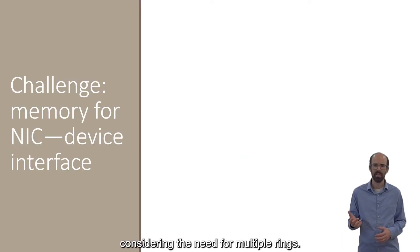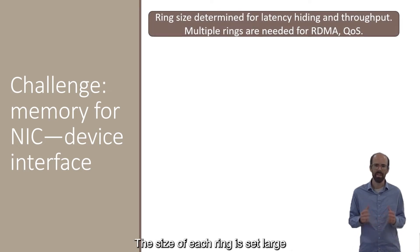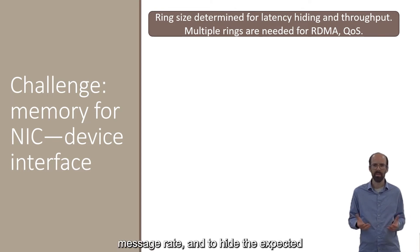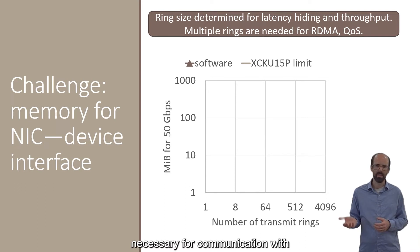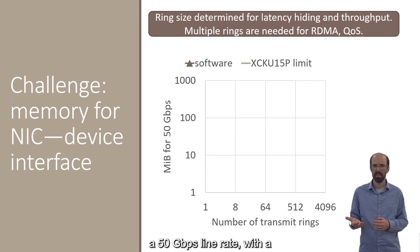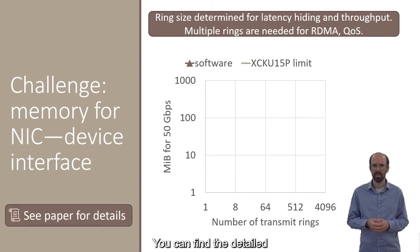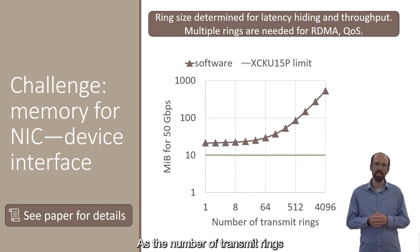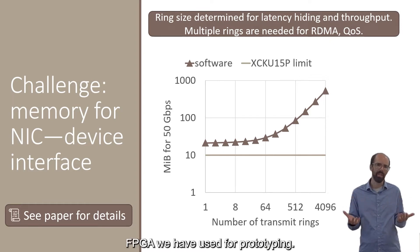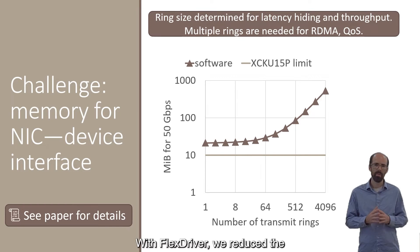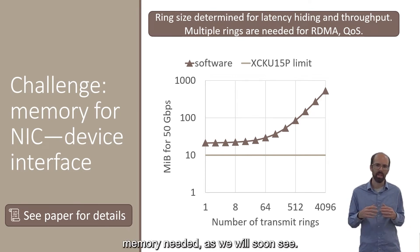This challenge becomes more difficult considering the need for multiple rings. The size of each ring must be set large enough to meet the desired throughput or message rate and to hide the expected latency, and multiple rings may be needed for RDMA or for performance isolation. For example, we analyzed the memory necessary for communication with an NVIDIA ConnectX 5 NIC, assuming a 50 Gbps line rate with a varying number of transmit rings. As the number of transmit rings grows, so does the memory, and it is much higher than the limit of the FPGA we used for prototyping. With FlexDriver, we reduce the memory needed, as we will soon see.